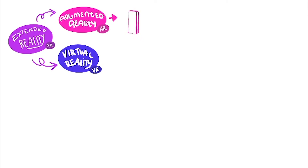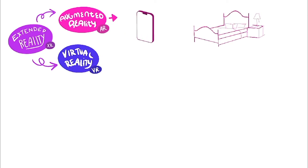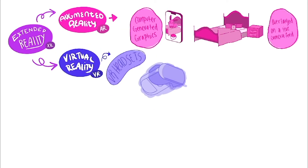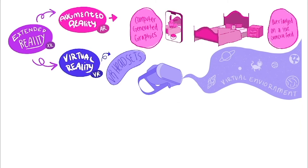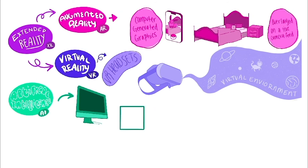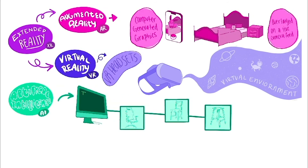To wrap up, let's review. Extended reality, or XR, is an umbrella term used to describe the fusion of real and virtual environments. The two main subcategories under XR are augmented reality and virtual reality. AR is when elements of the real world are augmented, enhanced, or replaced with computer graphics. VR refers to a computer-generated simulation allowing users to interact within an artificial three-dimensional environment. Next is artificial intelligence, or AI — a broad term for any technology able to perform tasks like problem solving using information from large amounts of data, a process also known as machine learning.